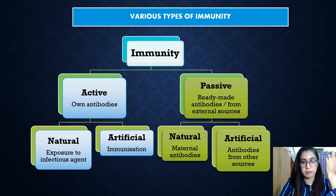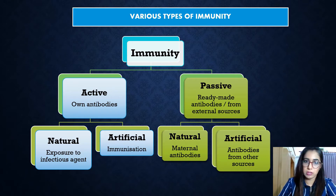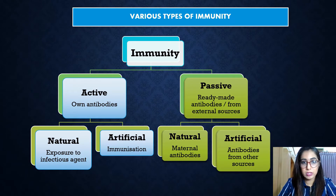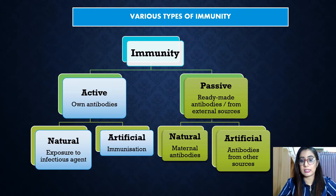There are two types of immunity: active immunity and passive immunity. Active immunity means the lymphocytes produce their own antibodies in response to stimulation by antigens. Passive immunity means the body receives antibodies from an external source — they don't produce their own antibodies. Both types can be naturally or artificially acquired.